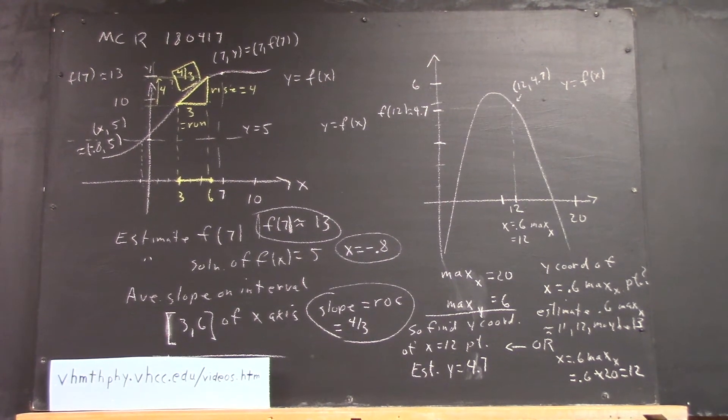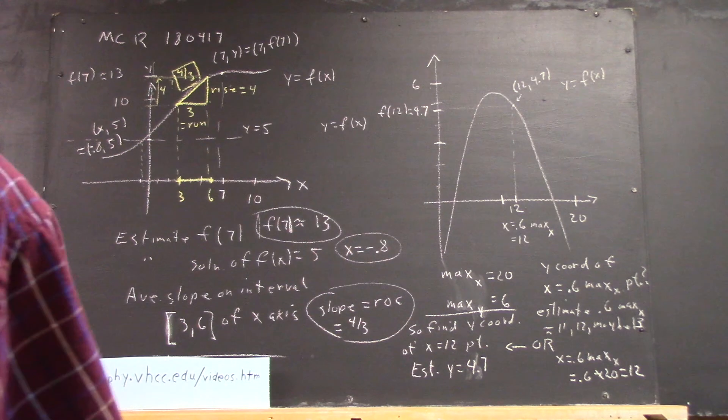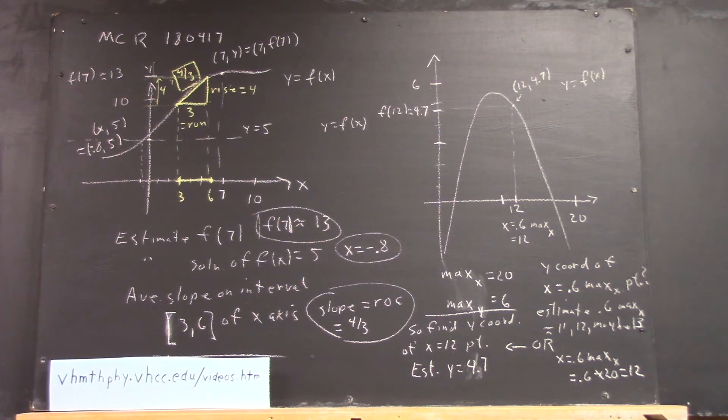Now, see if you can do the next estimate, which is the estimate for x equals 0.2 max x. But let's skip to the x and y coordinates of the point for which y equals 0.5 max y, which ought to be pretty easy to calculate.